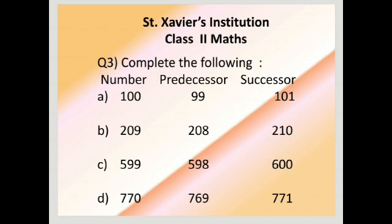209: predecessor, what number comes before? 208. Successor, what number comes after? 210. 599, in the same way: predecessor minus 1 is 598, successor plus 1 is 600. 770: predecessor, what number comes before? 769. Successor, what number comes after? 771.